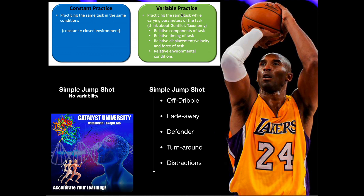So, constant and variable practice. A good example to illustrate the difference is a jump shot in basketball. Constant practice is practicing the same task in the same conditions, the same environment, the same way every single time. Imagine going into a court and picking a spot somewhere midway between the basket and the three-point line, and you just practice a jump shot the same way, in the same conditions, the exact same spot. There's no variability in constant practice.